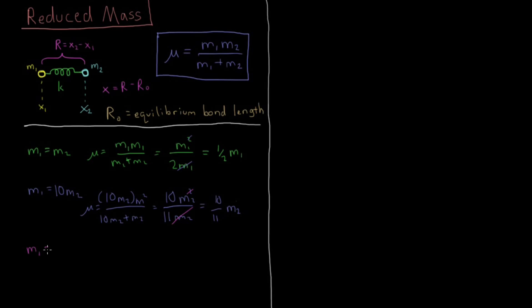And similarly, if we have m1 equals 100 times m2, going through that same math, we could show that you get 100 over 101 m2. So what's happening is very quickly this heavier particle is not moving relative to this lighter particle. So the lighter atom is going to undergo the majority of the displacement, whereas the heavier atom is going to stay more fixed in position because it has a higher mass and a higher resistance to acceleration.